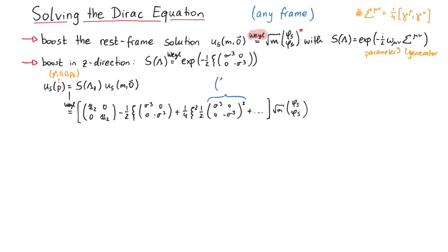Fortunately, the matrix sigma 3 minus sigma 3 becomes the identity matrix when we square it. This means, for all orders, there will ever only be two kinds of matrices: the identity and sigma 3 minus sigma 3.